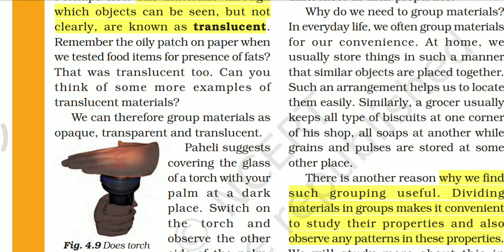Can you think of some more examples of translucent materials? So we can therefore group materials as opaque, translucent, and transparent. We can identify which material is transparent and which is translucent.